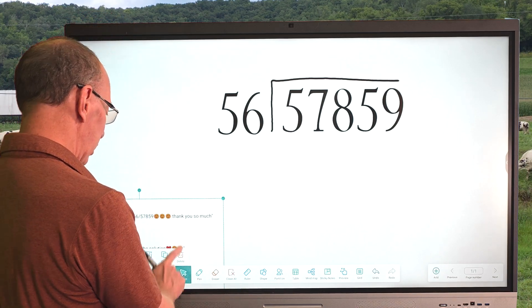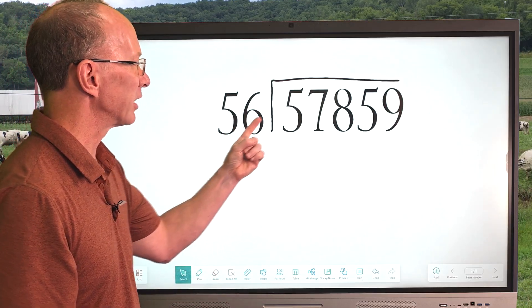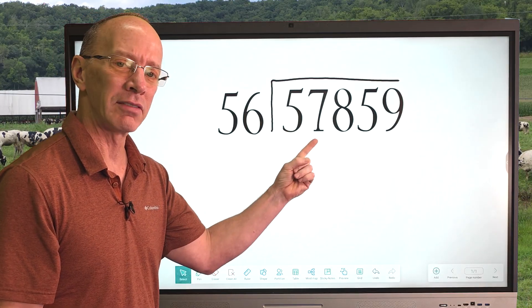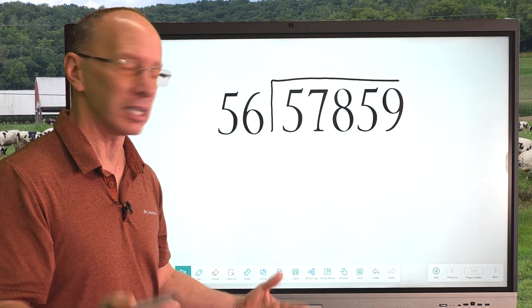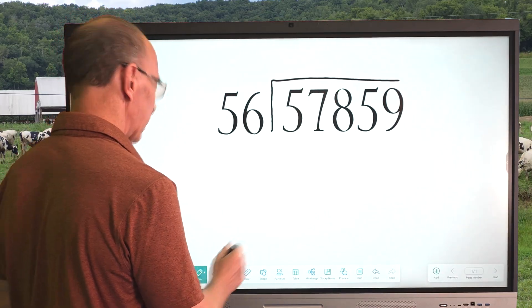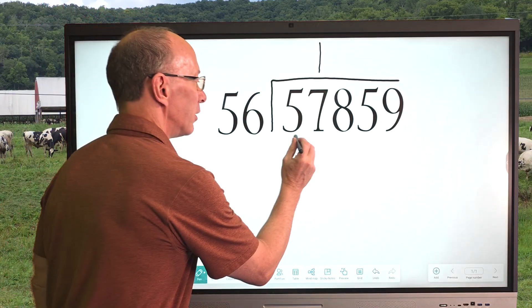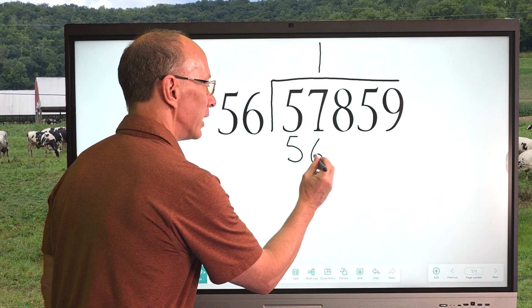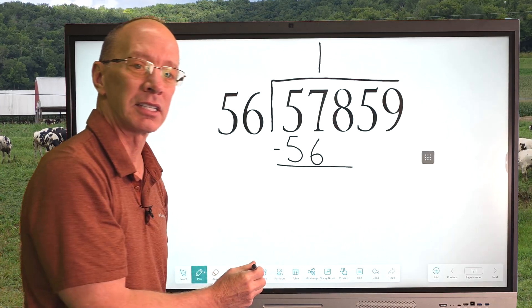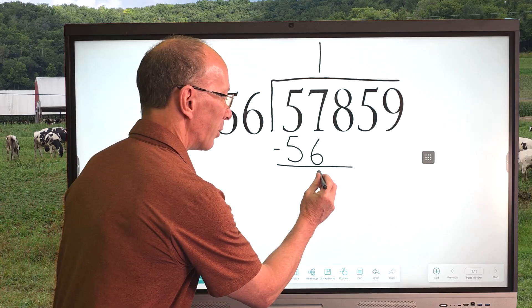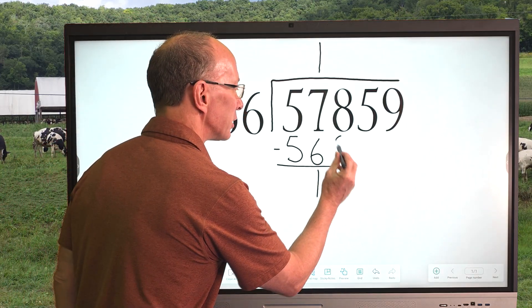All right, we have a big problem. So how do you get started? We need to know how many times 56 can go into not five because that's too small, into 57. Well I think I can put it in there one time because one times 56 would equal 56. So I'm going to put the one right here. And then one times 56 equals 56. And our next step is subtraction. So I'm going to subtract just like this, and then seven minus six equals uno, one. So I'm going to put one right here.